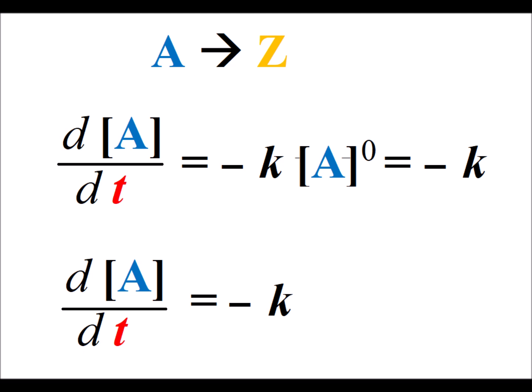So let's assume our reaction is a simple A going to Z. The change of the concentration of A over time is equal to minus k [A] to the 0th power. That's what makes it a 0th order reaction. And since [A] to the 0th power is simply 1, this gives us that d[A]/dt is equal to minus the rate constant k.